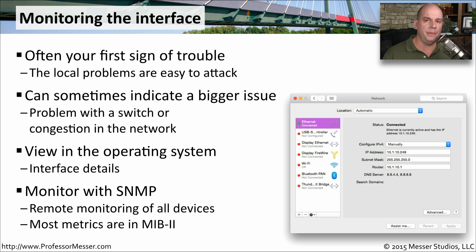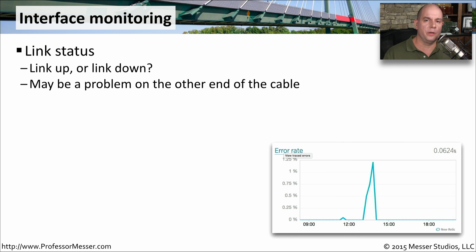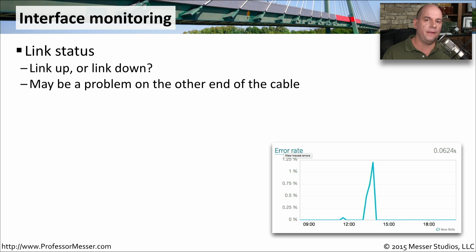MIB2 is a very common MIB — if a device supports SNMP, there's a very good chance it also supports MIB2. There are a number of statistics that are important to monitor on an interface. Let's start with the link status. If a link is up and operational, that's important to know. It's also important to know if a link is down, or if the link is alternating between being up and being down, which might indicate a problem with a cable, the interfaces themselves, or someone making a change to the network outside the scope of normal change control.